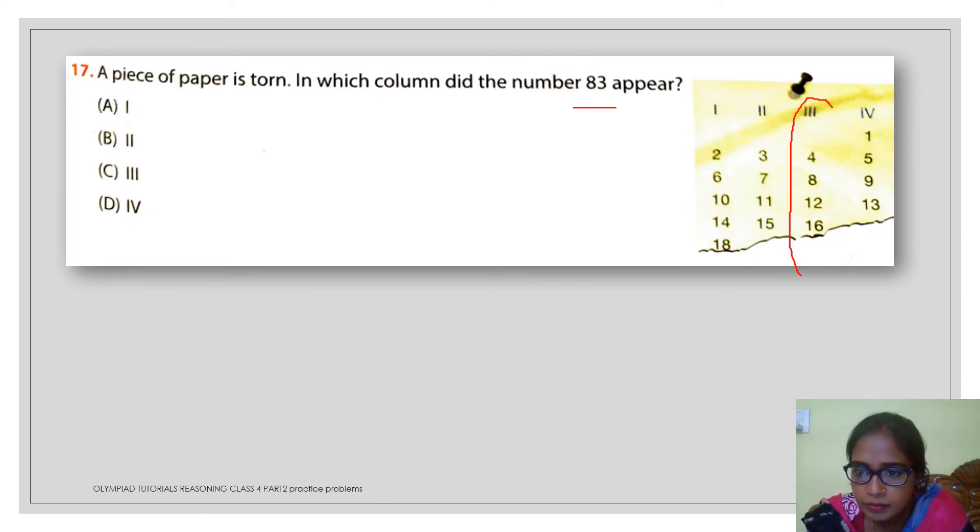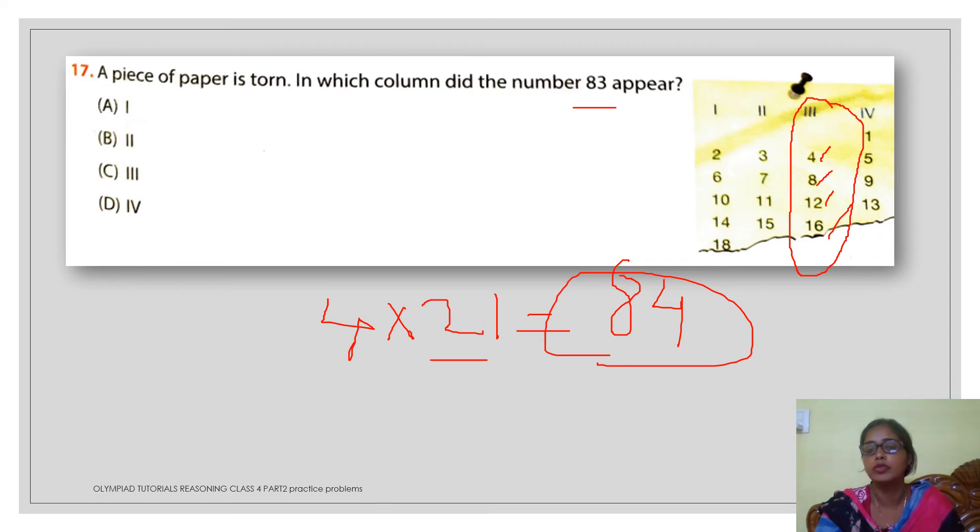If you just go on continue observation, here you can see, this column number 3, here you can see that this is a multiple of 4. 4 is 4 table. 4 1s are 4, 4 2s are 8, 4 3s are 12, 4 4s are 16. This will become quite easy. If you just go on checking the multiples, you will see that 4 into 21 will give you 84.